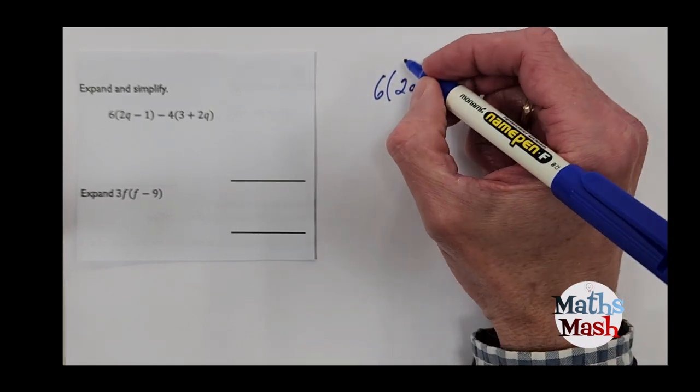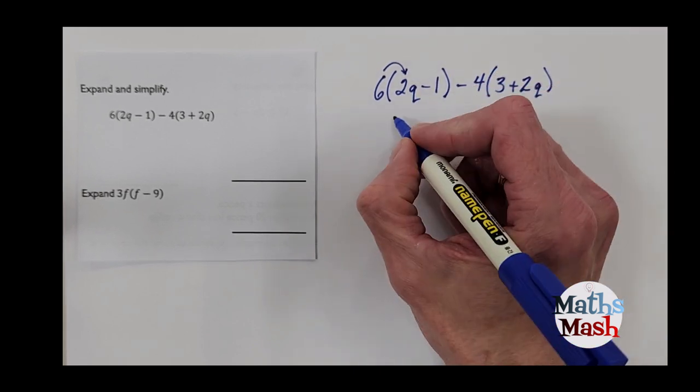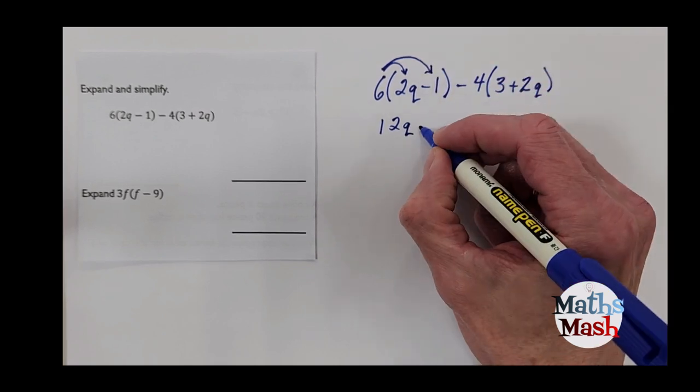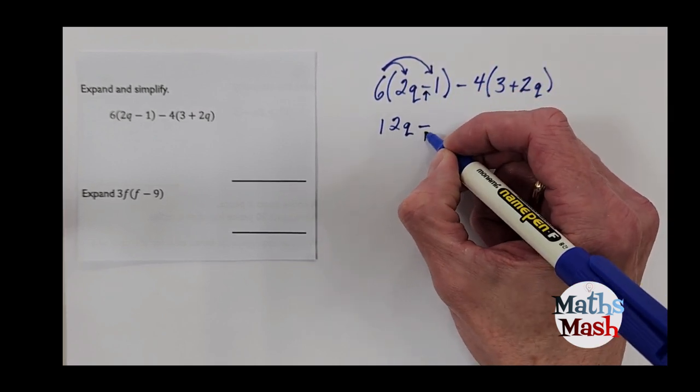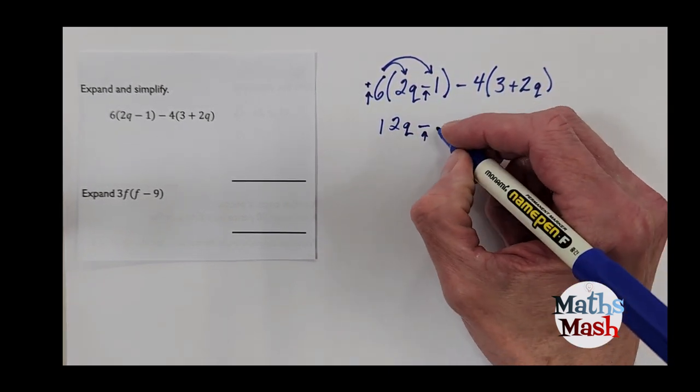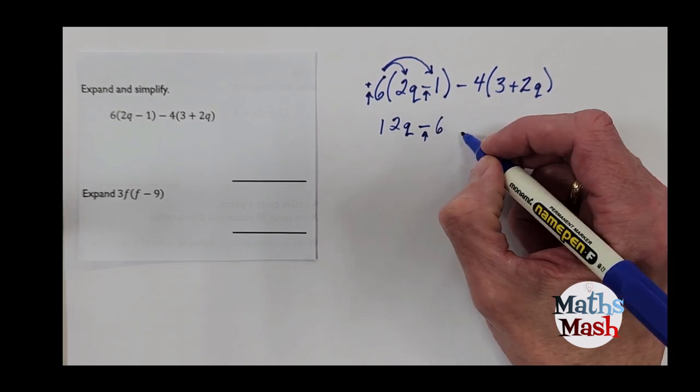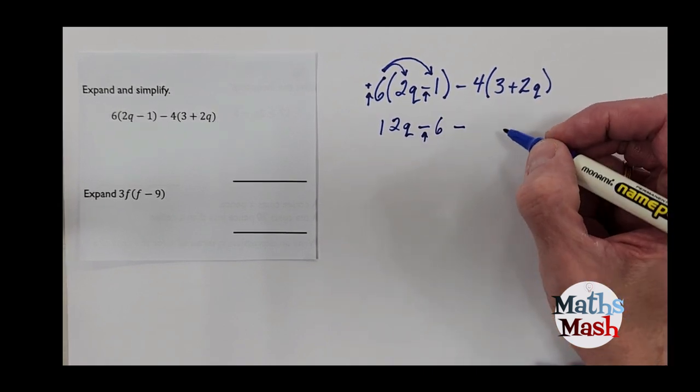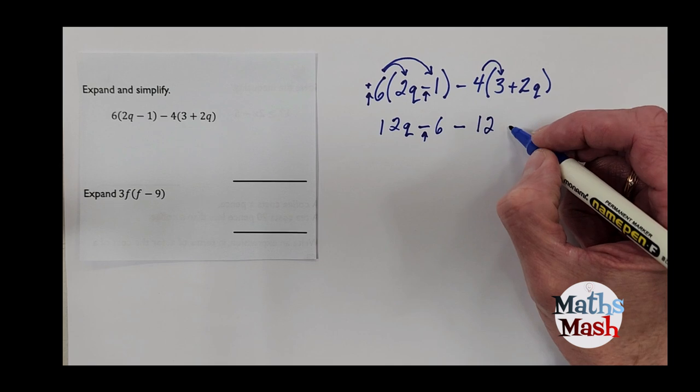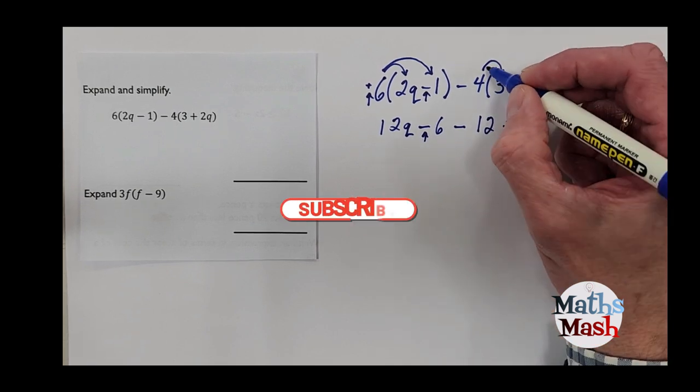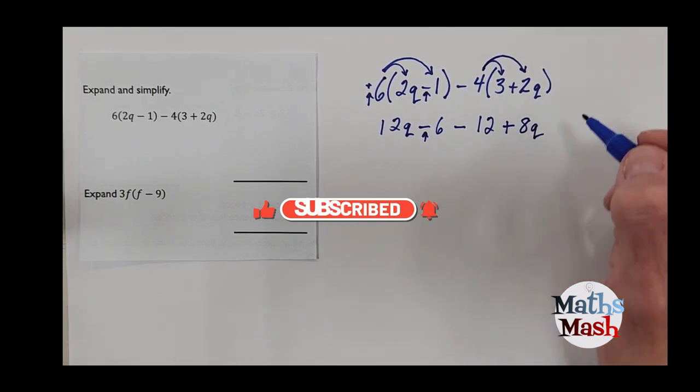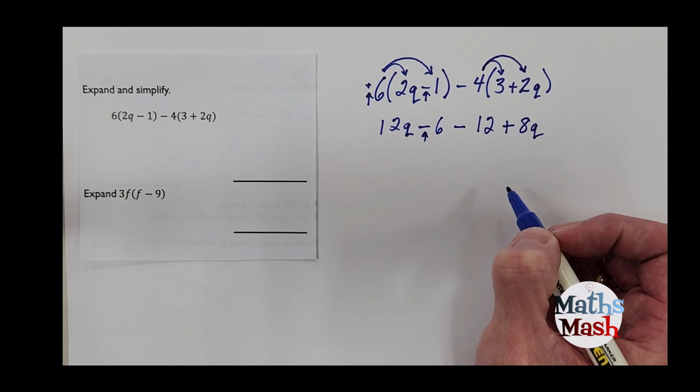Okay, so I've got 6 times 2 gives me 12q. Don't forget the q. People often forget the q. And I've got 6 times negative 1. Now that's a negative 1. That means I'm multiplying it by positive 6. So that means a positive multiplied by a negative gives me a negative. So that's going to be negative 6 subtracting. Now I multiply 4 times 3 gives me 12. All right, and plus and then 4 times the coefficient 2 gives me 8q.